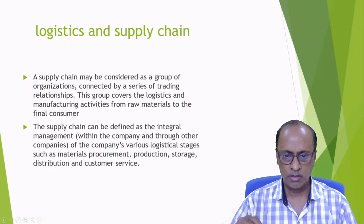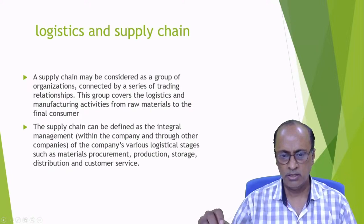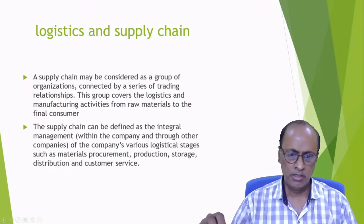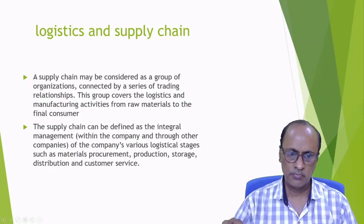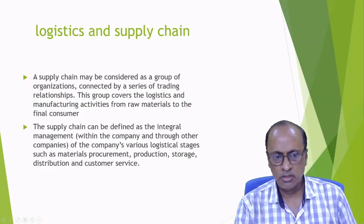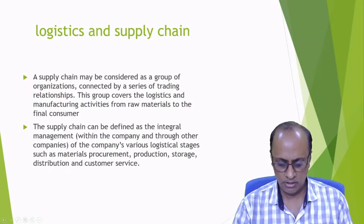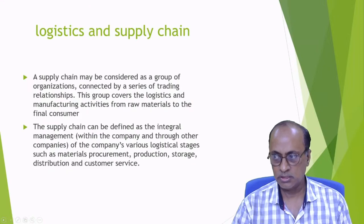Raw materials go to the production unit, from the production units to the distribution points, from the distributors to the retailers, and finally to the customers. It's a chain which combines all these entities, and all these entities do their activities from raw materials till the final customers.